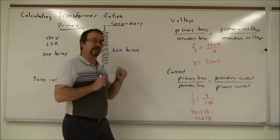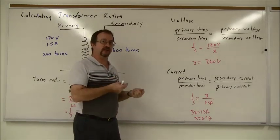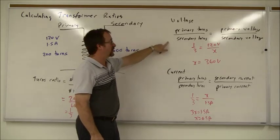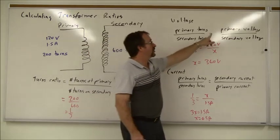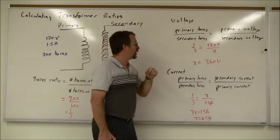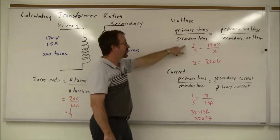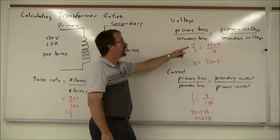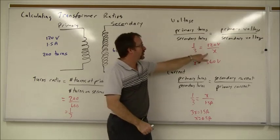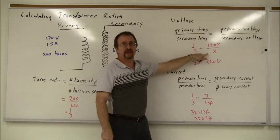For voltage, there's a direct relationship in the turns from primary to secondary. So my ratio of primary turns to secondary turns equals the ratio of the primary voltage to the secondary voltage. So I write in the values that I know, my turns ratio is one to three, primary to secondary. My voltage, primary, is 120 volts. The secondary is what I'm going to find out.